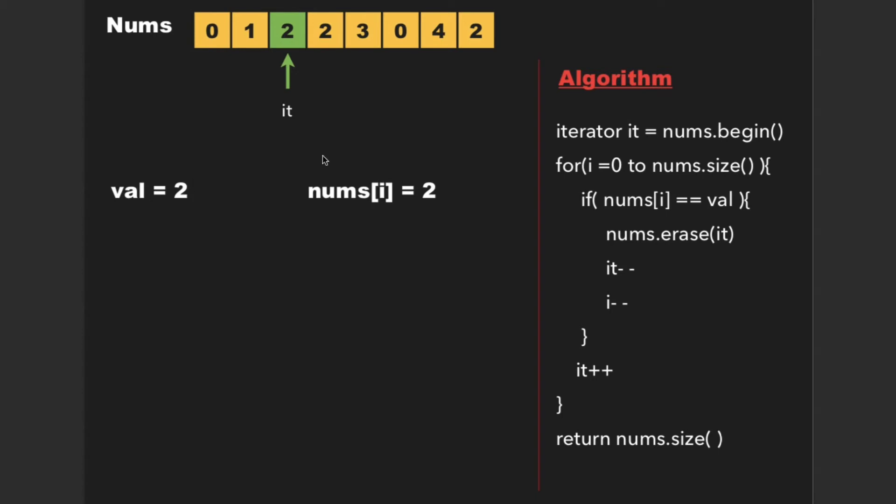Now the value of nums[i] is 2 and val is 2. Since both are equal, we erase 2 from nums array. While doing so, the iterator points to the next element, so we need to decrement it to bring it back to the original element.